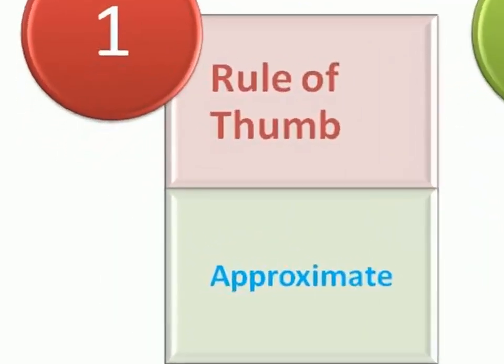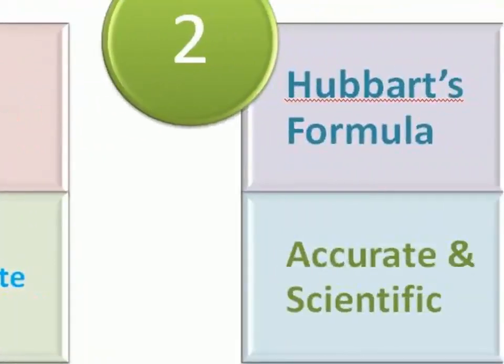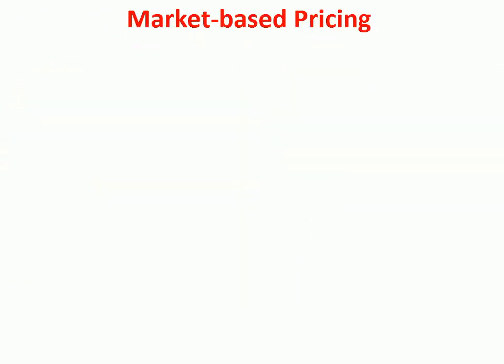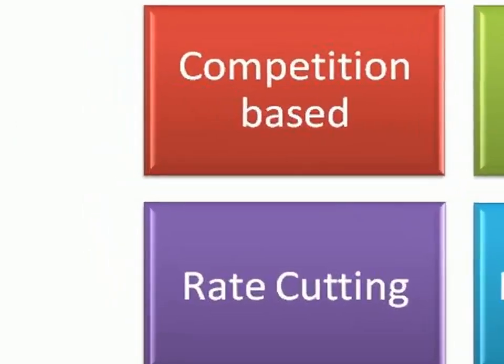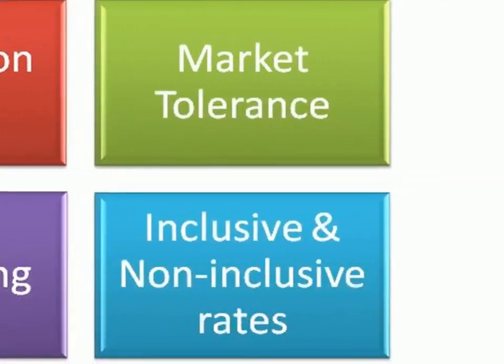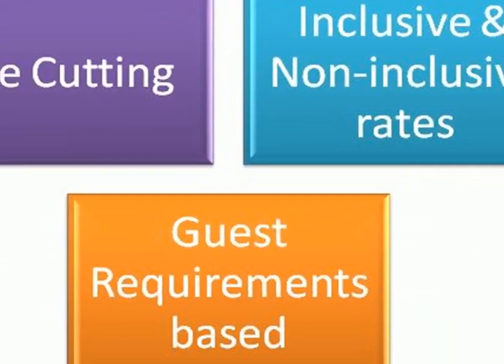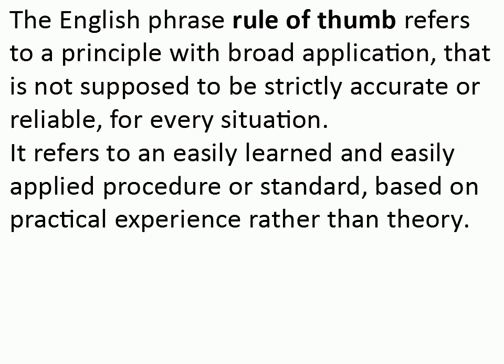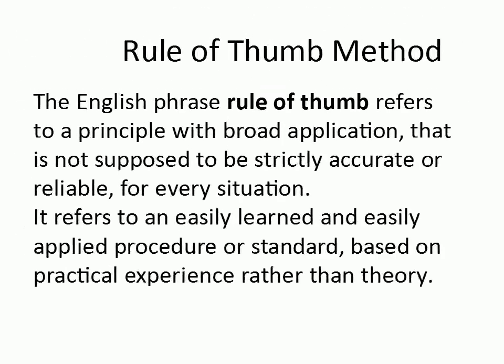Cost-based methods are rule of thumb and Hubbard's formula. The English phrase 'rule of thumb' refers to a principle with broad application that is not supposed to be strictly accurate or reliable for every situation. It refers to an easily learnt and easily applied procedure or standard based on practical experience rather than theory.